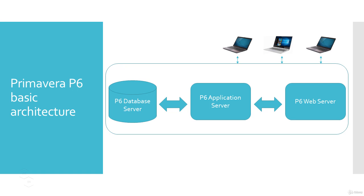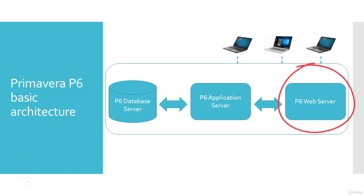Next, we have an application server in the middle where the main Oracle Primavera P6 application is running. After that, we install a web server where users or client machines connect using their laptops or desktops. Users can connect through an internet browser client such as Google Chrome, Internet Explorer, or Firefox. Please note that Primavera P6 Professional can also be used as a client, and it can also be used in a standalone environment. For learning purposes, that's what we will be using throughout this course.